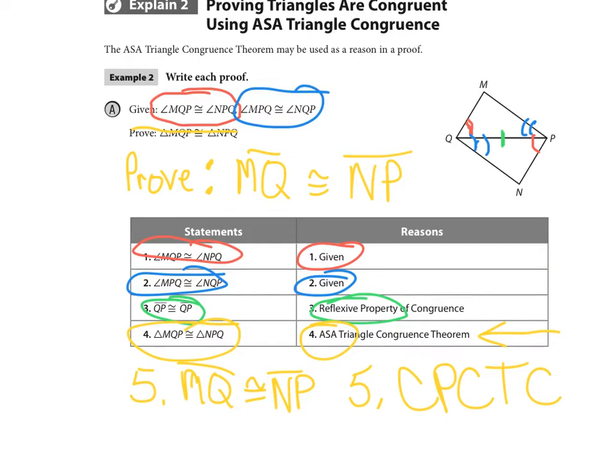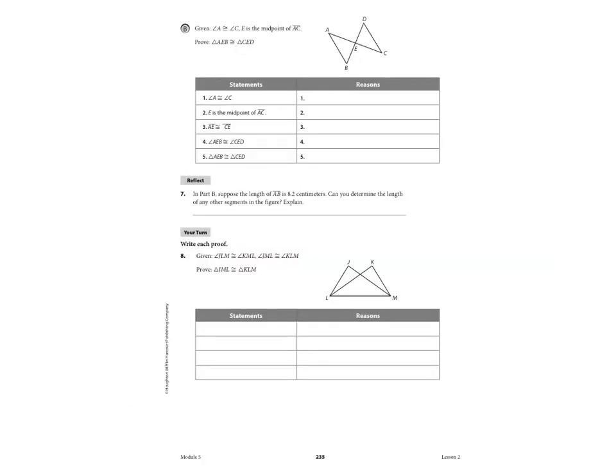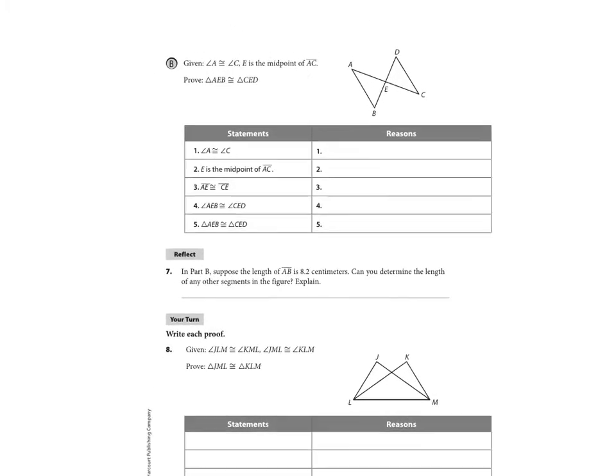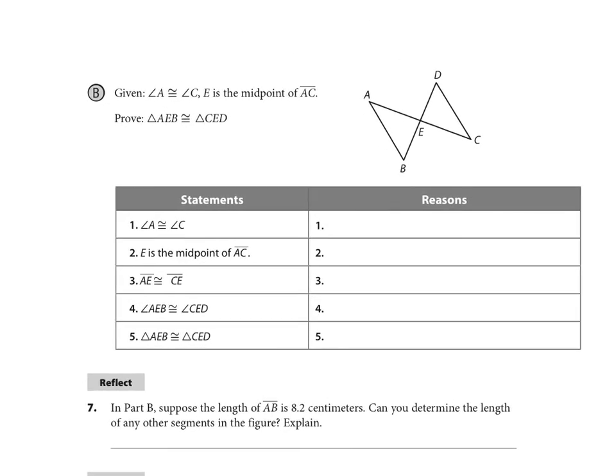So first it tells us angle A is congruent to angle C, and that's given. Then it tells us that E is the midpoint of AC. That's given.